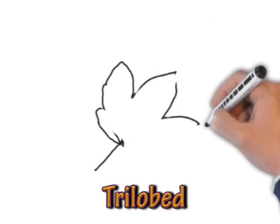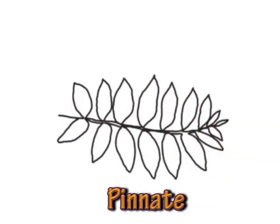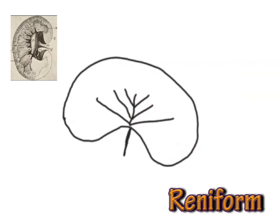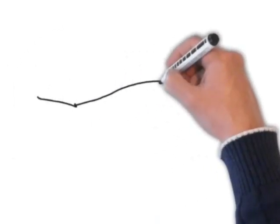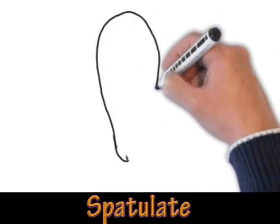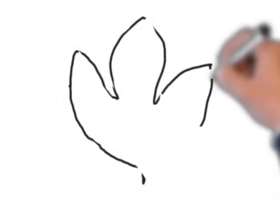Then there is trilobed, which means three lobes. We have pinnate, where you can see two rows of leaves opposite each other. Then we have the beautiful reniform — like the kidney; think of renal artery, renal vein — kidney shape. Then we have the rhomboid, like a rhombus, like a square pushed over on its side — sometimes you get rhomboidifolia. And then we have spatulate, like a spatula: think of a spatula spoon for picking things up in cooking or medicine.